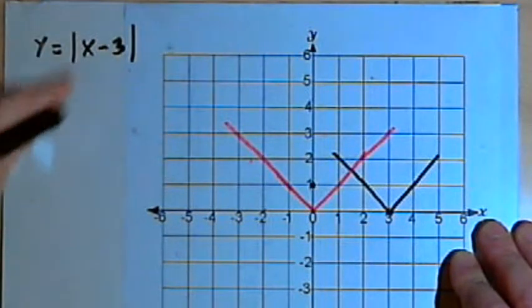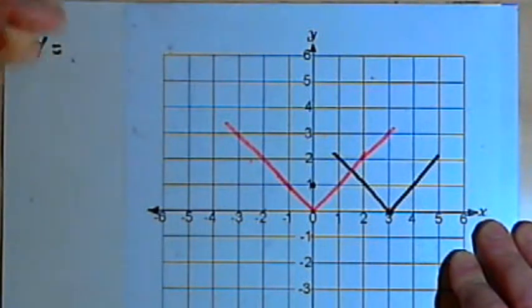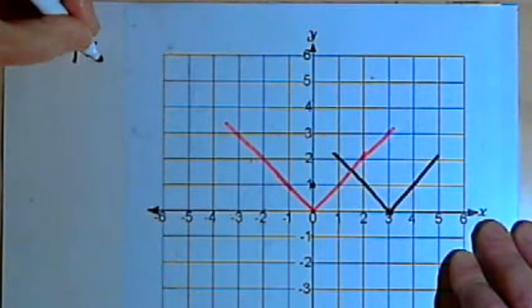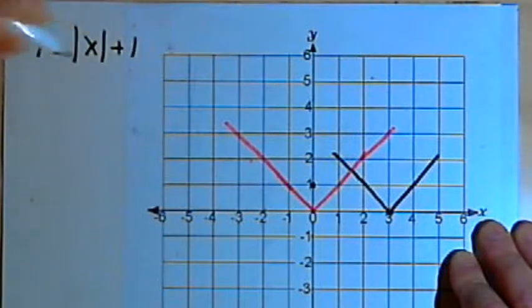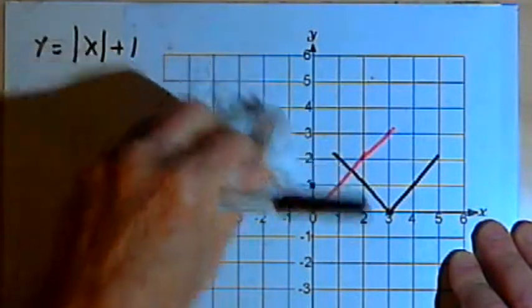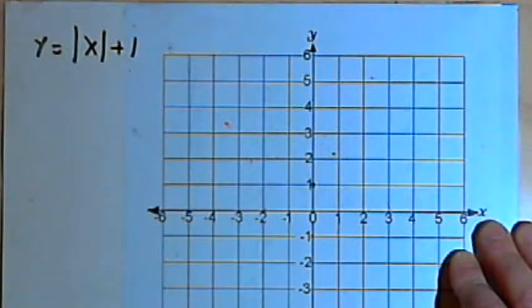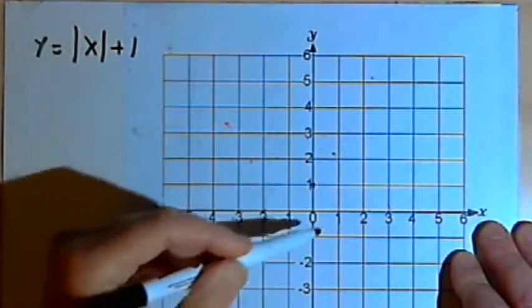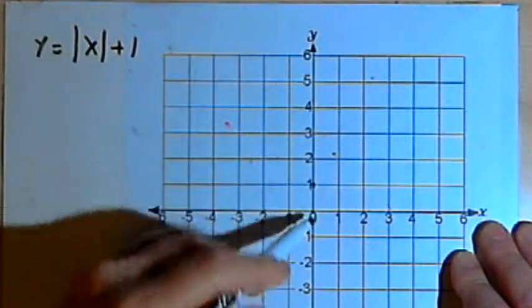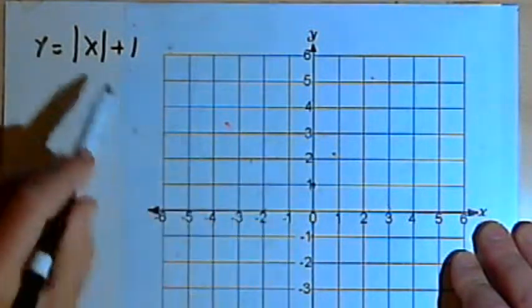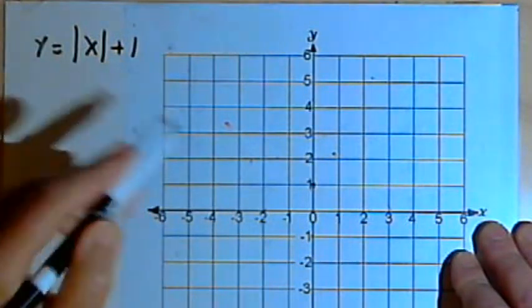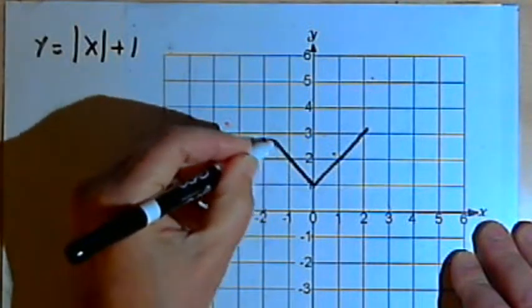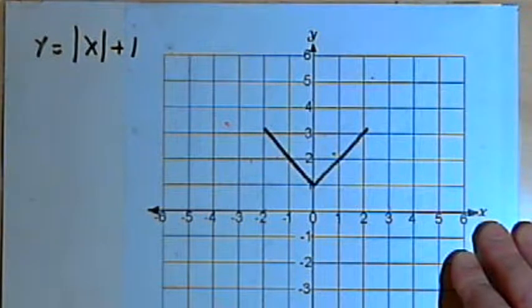Let's try some variations on this absolute value. Let's do the absolute value of x, and then after the absolute value sign ends, plus 1. This is telling us to take the absolute value of x, which was that V that began at the origin, and just raise it up one unit. So we're going to have a V that's raised up one unit higher than the original.